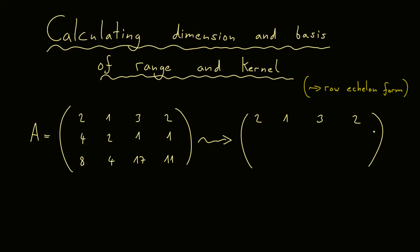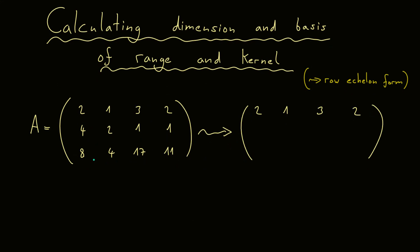First you copy the first row in the matrix, because this is the row we want to start operating with. We want to generate zeros in the first column, meaning we want to eliminate the 4 and then the 8. So for the second row, you have to subtract 2 times the first row to get a zero. What we get is a zero here, then also a zero here. Then we subtract minus 6, so we get minus 5, and there we get minus 3.